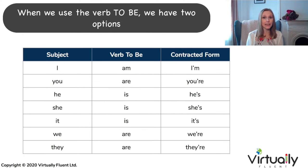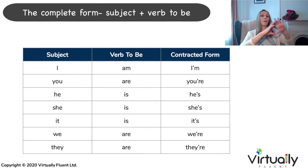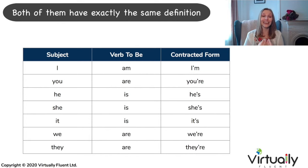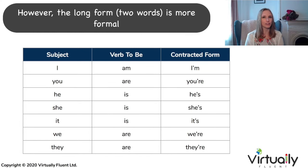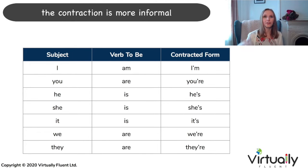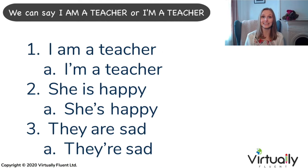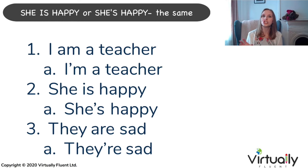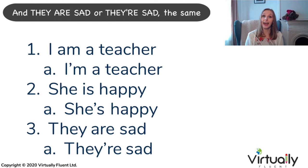When we use the verb to be, we have two options: the complete form — subject, verb to be — or the short form, also called the contracted form. Both of them have exactly the same definition. However, the long form, two words, is more formal. The contraction is more informal. We can say 'I am a teacher' or 'I'm a teacher' — exactly the same. 'She is happy' or 'she's happy' — the same.